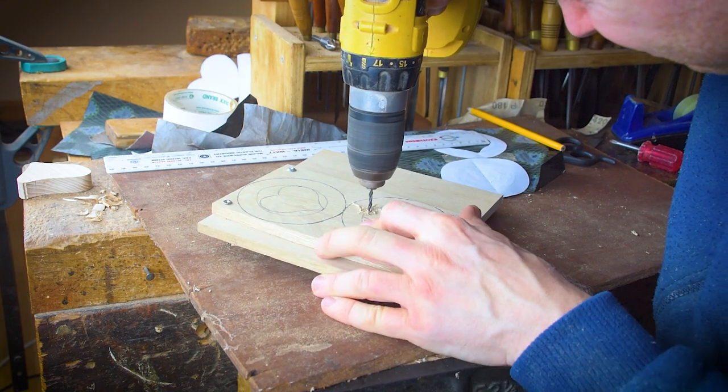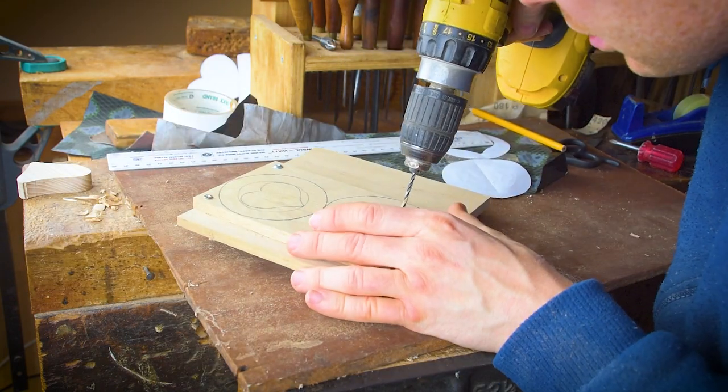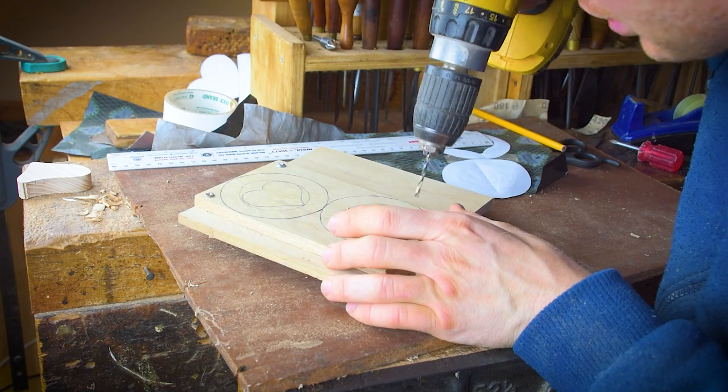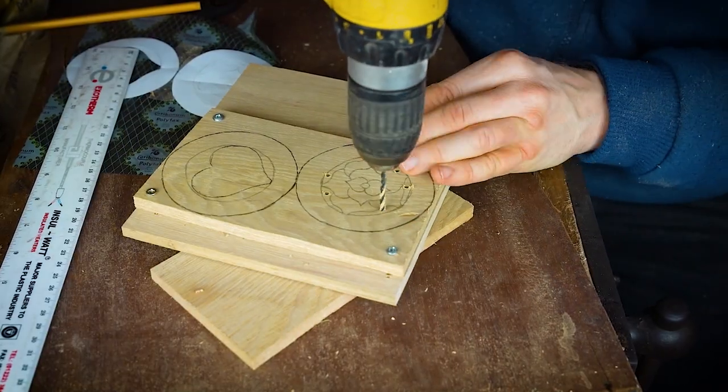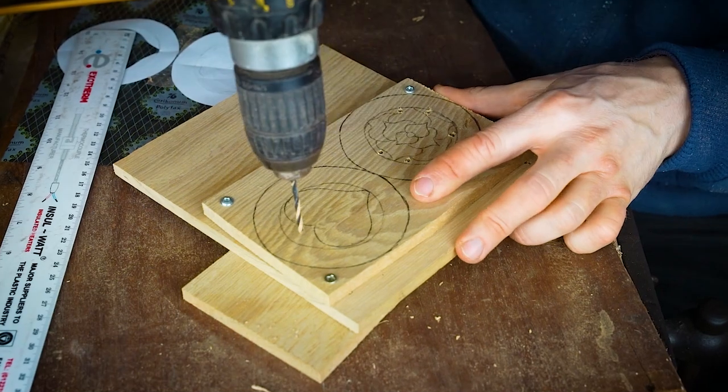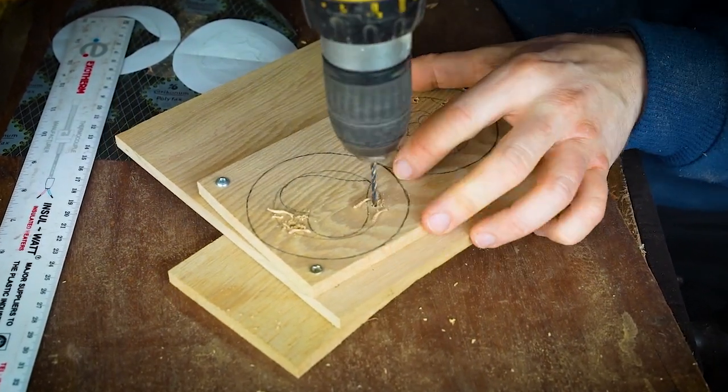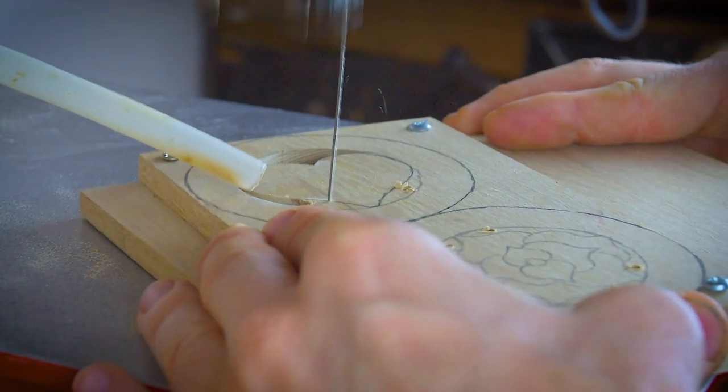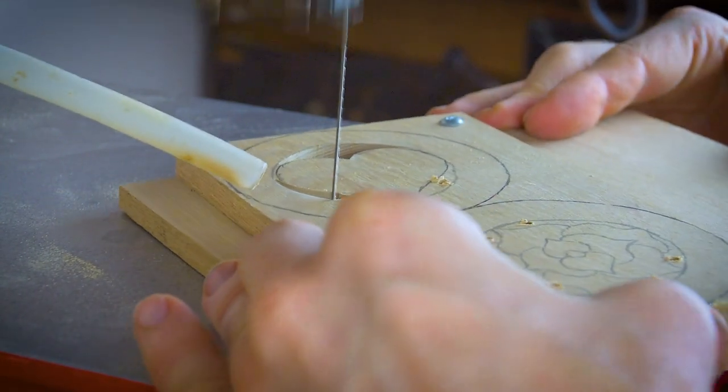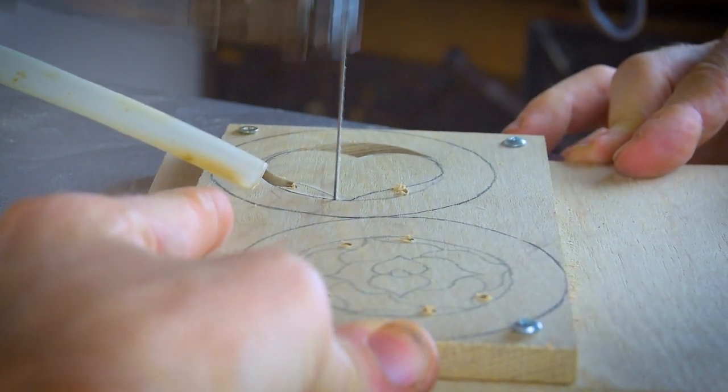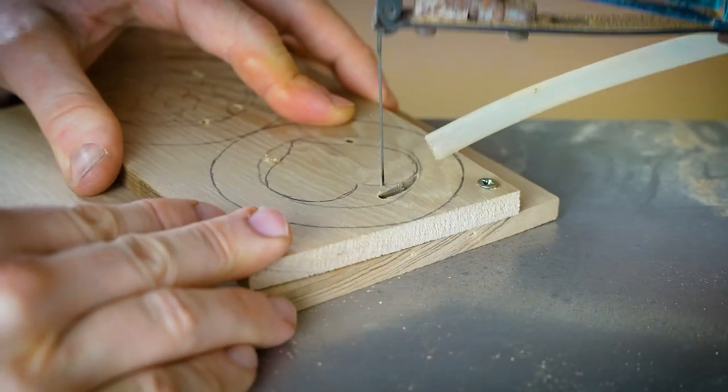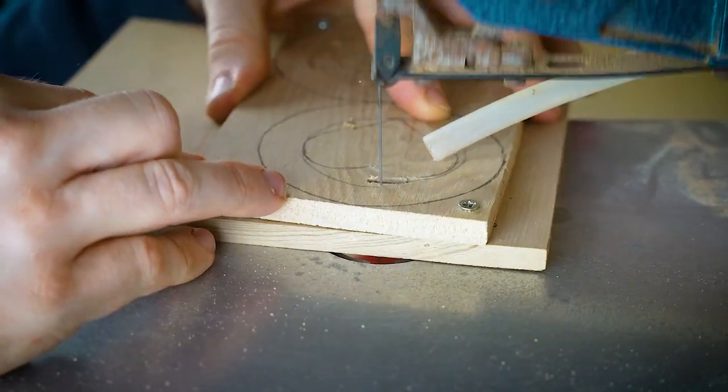As always you mark out your design, so again you can either stick it down using glue or mark it out using carbon paper. We prepare our coasters by drilling the holes that will be used later on for doing the pierce work, and then we are on to using our scroll saw.